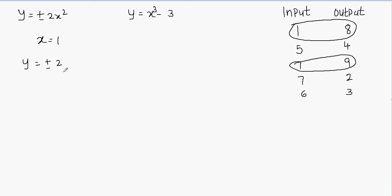So y equals plus and minus 2 times 1, which gives plus and minus 2. When you plug in x equals 1, you're generating two different results: positive 2 and negative 2. You're getting two different values of y for the same value of x. That's why this is not a function.